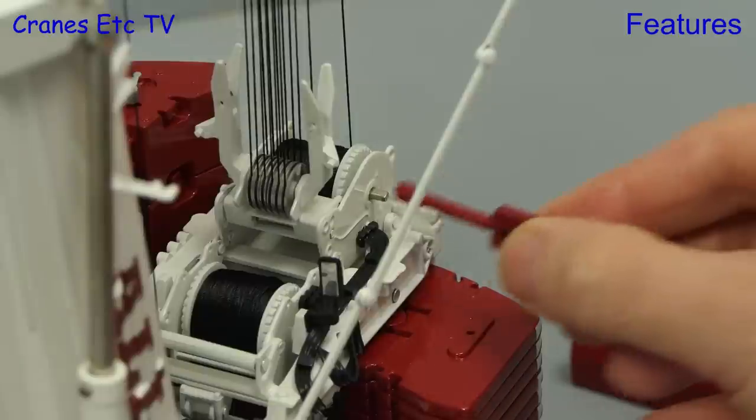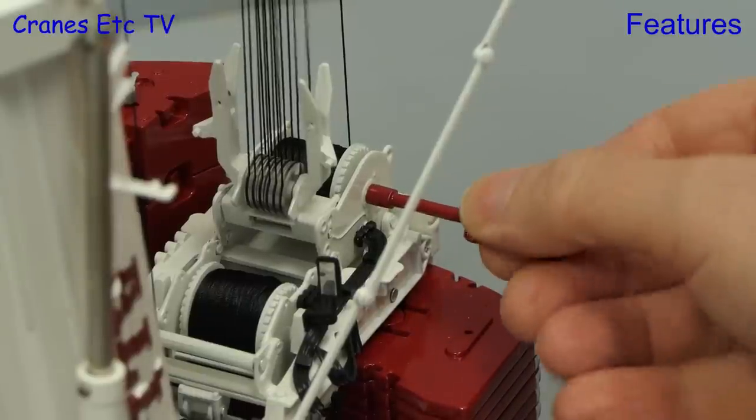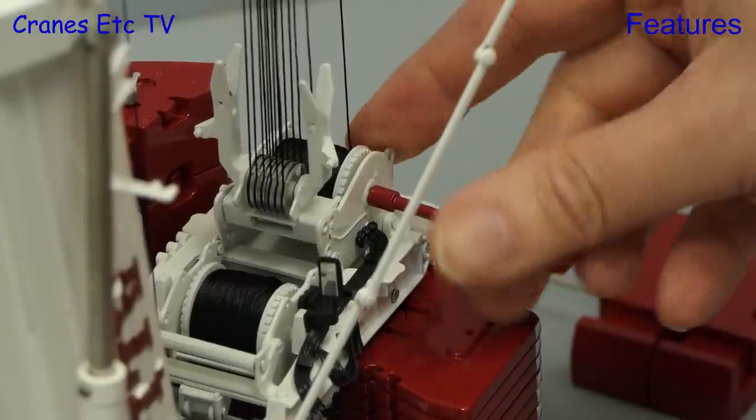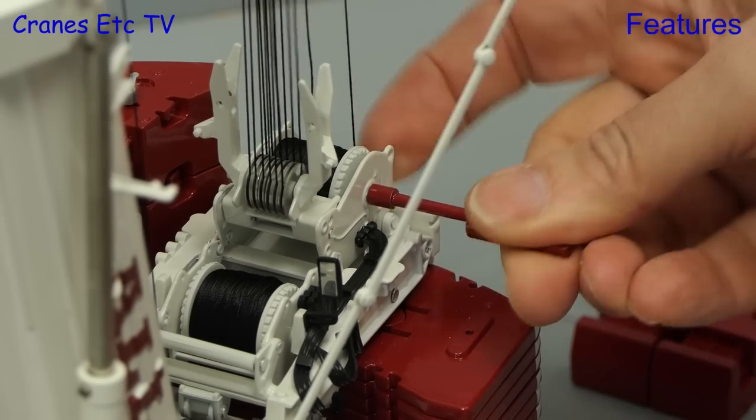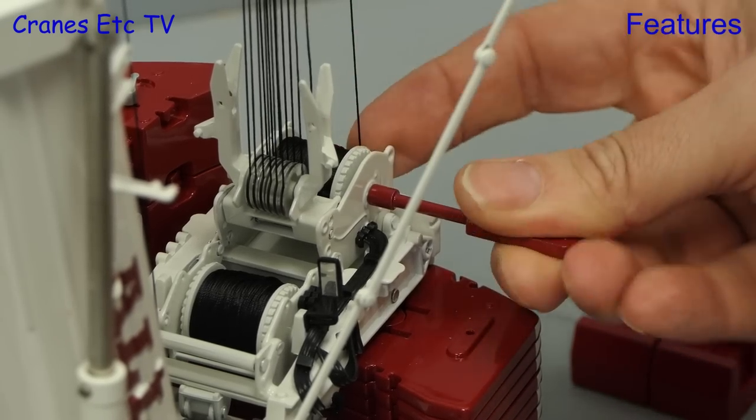You can operate the luffing jib using the winch on the crane although because of the somewhat strange reversed brake action of the winch it is fiddly to operate.